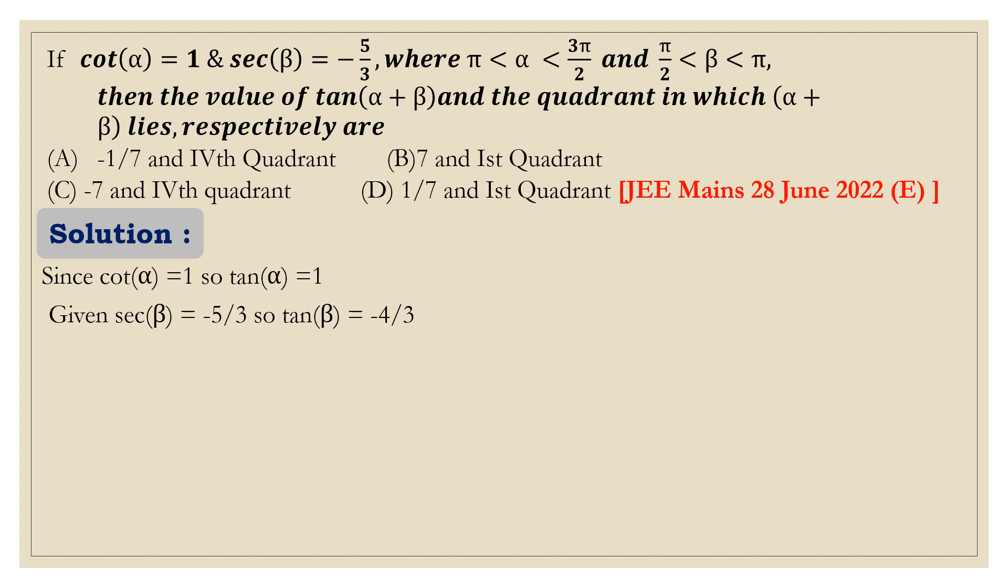It must be negative because β lies between π by 2 to π, second quadrant. Now, tan(α + β) equals tan α plus tan β by 1 minus tan α into tan β. We substitute the value of tan α which is 1 and tan β which is minus 4 by 3. After putting this, we get tan(α + β) equals minus 1 by 7.